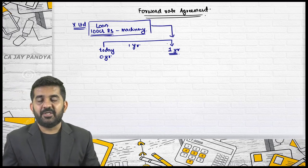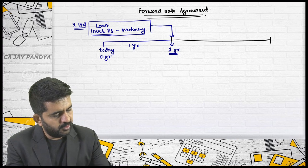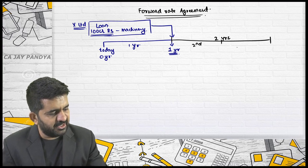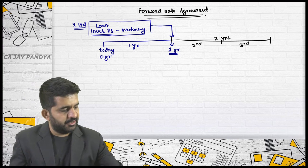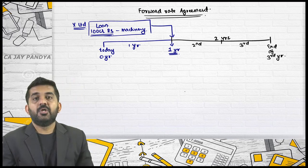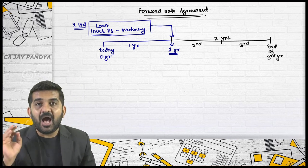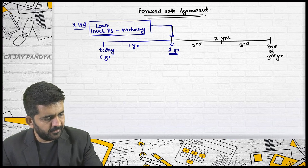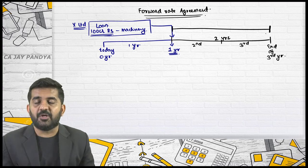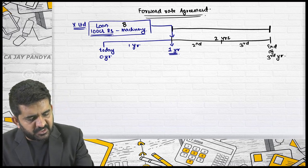The loan is required after one year, and it is required for two years — that is, the second year and the third year, ending at the end of the third year. They know that they will be requiring 100 crore rupees after one year for the period of two years. The problem is today's rate of interest is 8%.